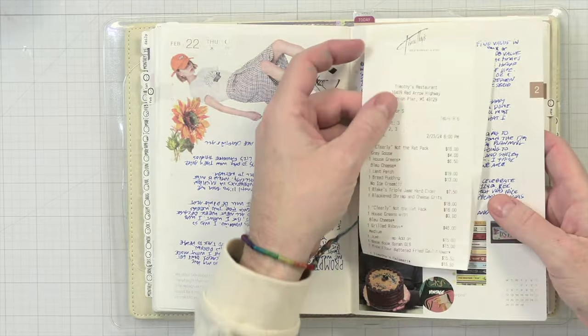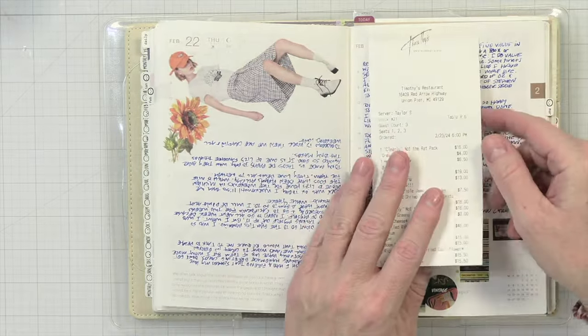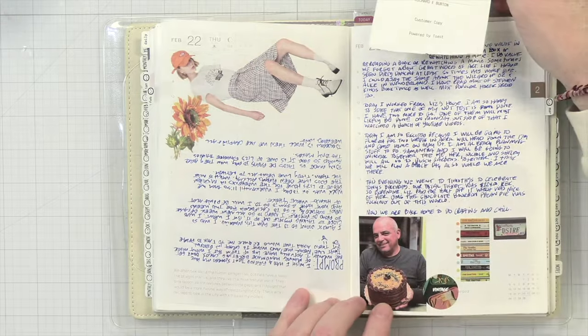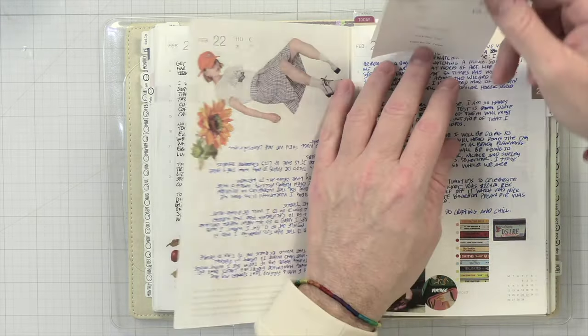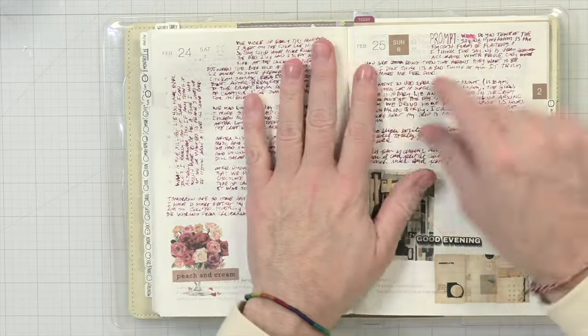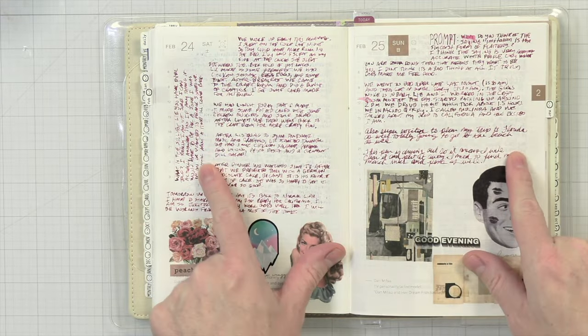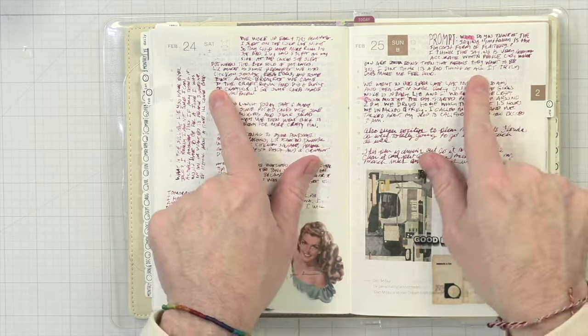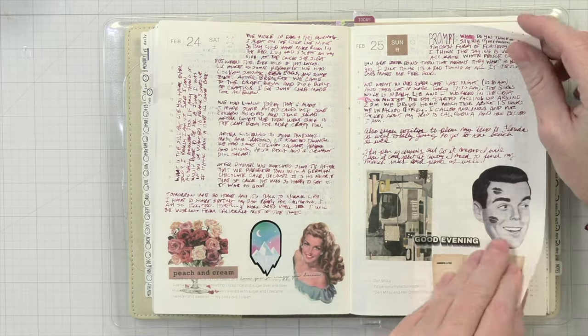And then like a receipt. This was a receipt for my husband's birthday dinner that we had. This is his cake. Super fun. And as you can see, the inks are rotating every two days. So that's kind of what I do.